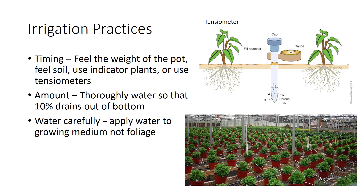Watering plants is a major responsibility because most horticultural crops are between 90 to 98 percent water. Both underwatering and overwatering can adversely affect the quality of a crop. Overwatering is the most common problem, which leads to oxygen deprivation in the root zone and ends in root rot. Important considerations for watering plants include timing, amount to apply, and watering carefully. Water should be applied before the plant shows signs of wilting, which indicates stress resulting in premature senescence and reduced crop yields. The proper time to water can be determined by simply feeling the weight of the pot, feeling the soil, using indicator plants, or using tensiometers, which are instruments used to measure the amount of water in a given pot.